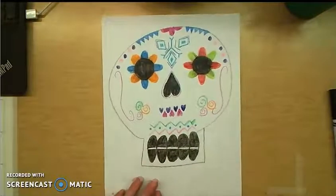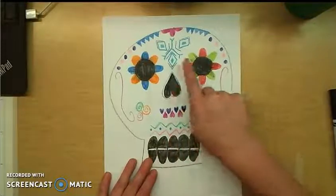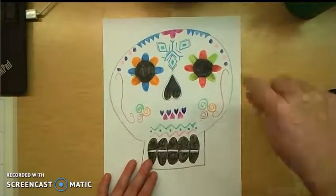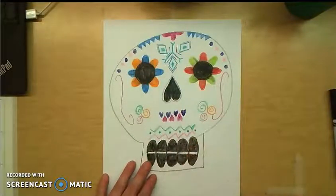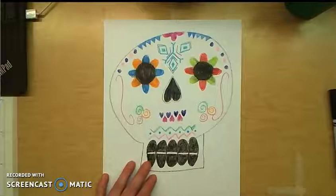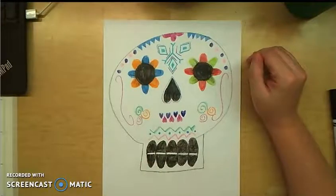This is one that I drew. So when you make your shape, your teeth and your nose and your eyes are going to be colored in black. But then you're going to use lines and shapes and patterns to decorate your sugar skull all around and fill all the white space of your skull.